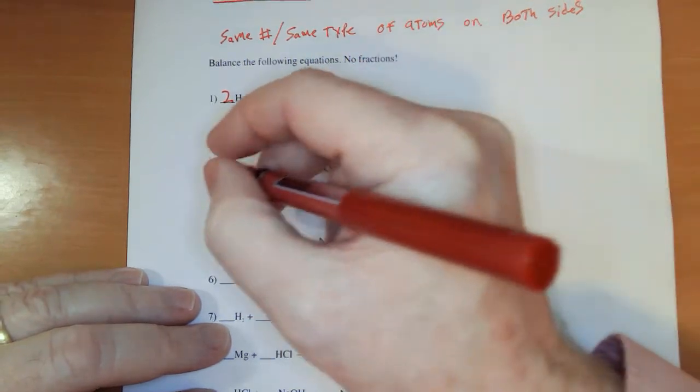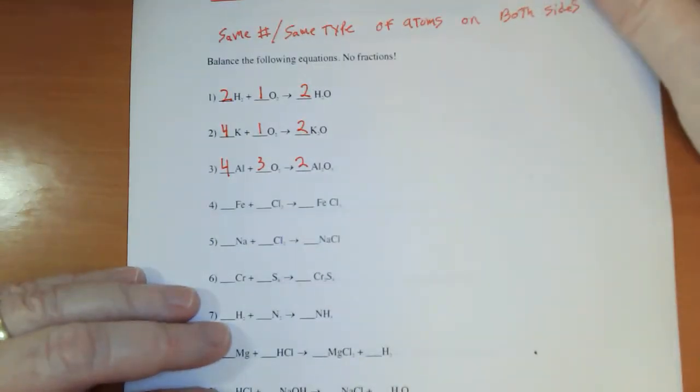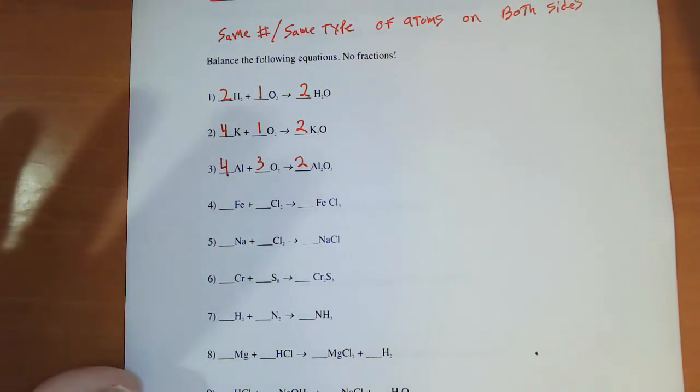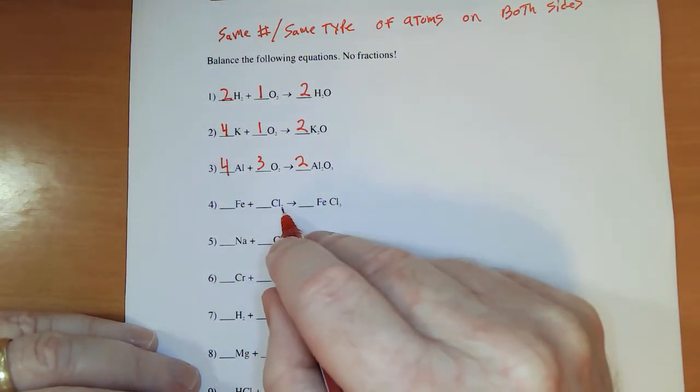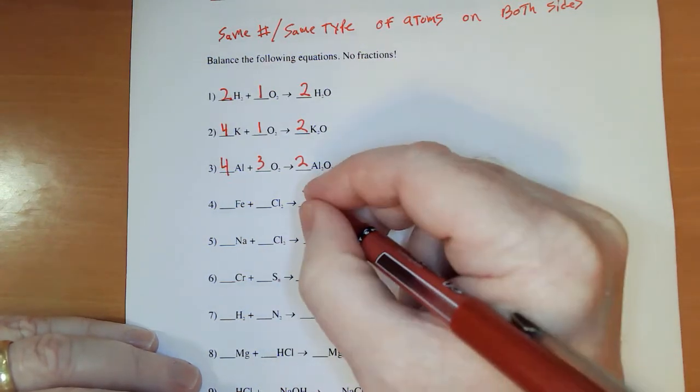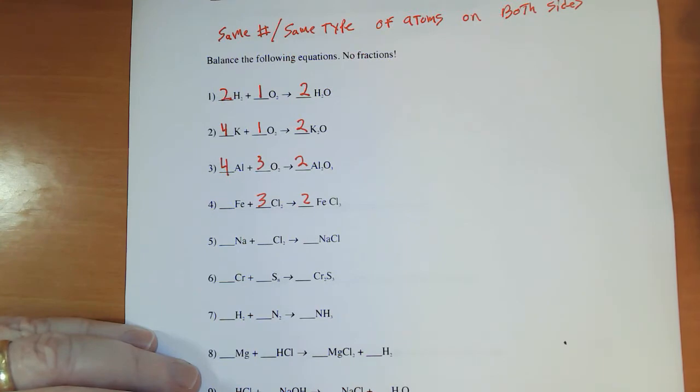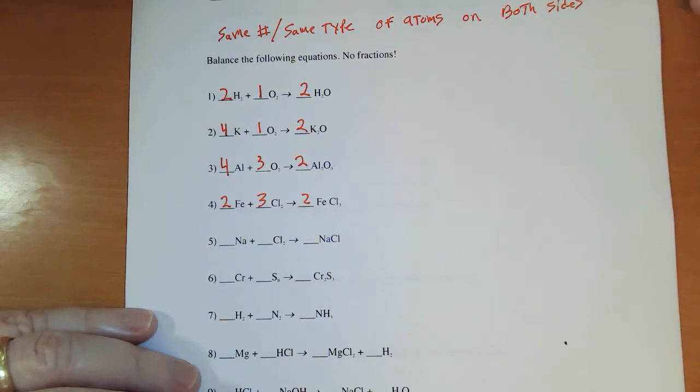Two times two on the aluminum is four. A lot of different ways of doing these folks. Don't get tuned into one way and think it's the only way. It's just what you happen to notice. Now in the next one, I'm noticing the two and the three again. So I'm thinking put a two there, put a three there. The chlorines are balanced. Two on the iron, so I put a two there.